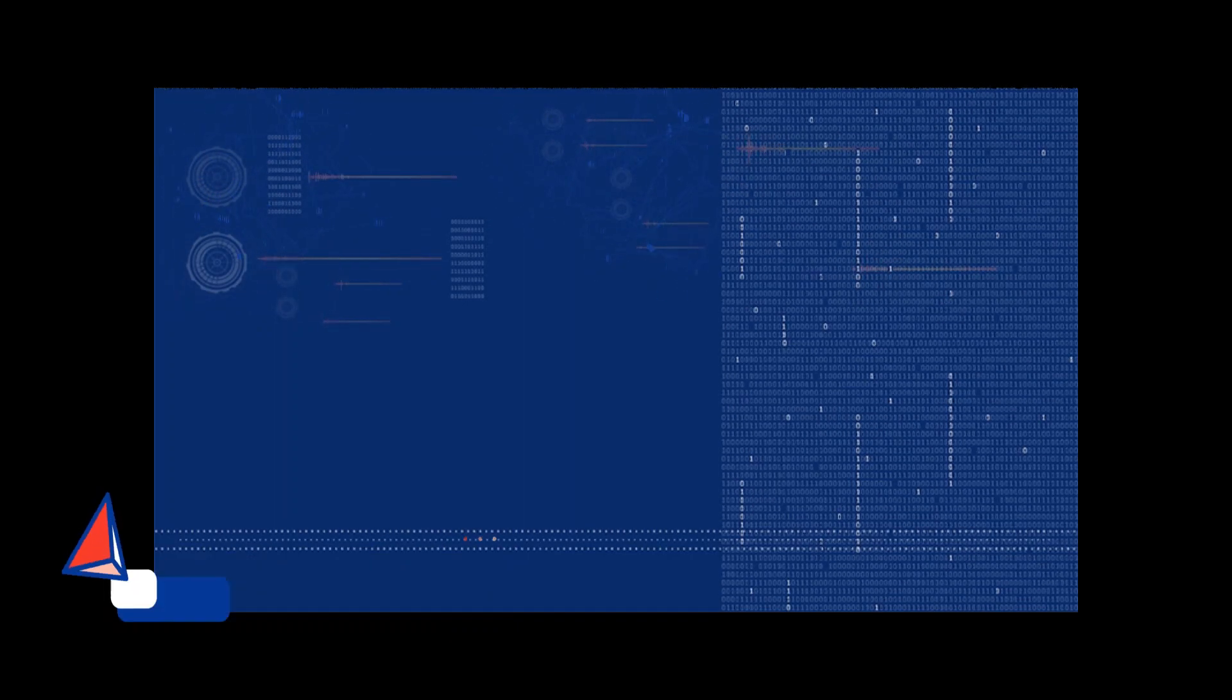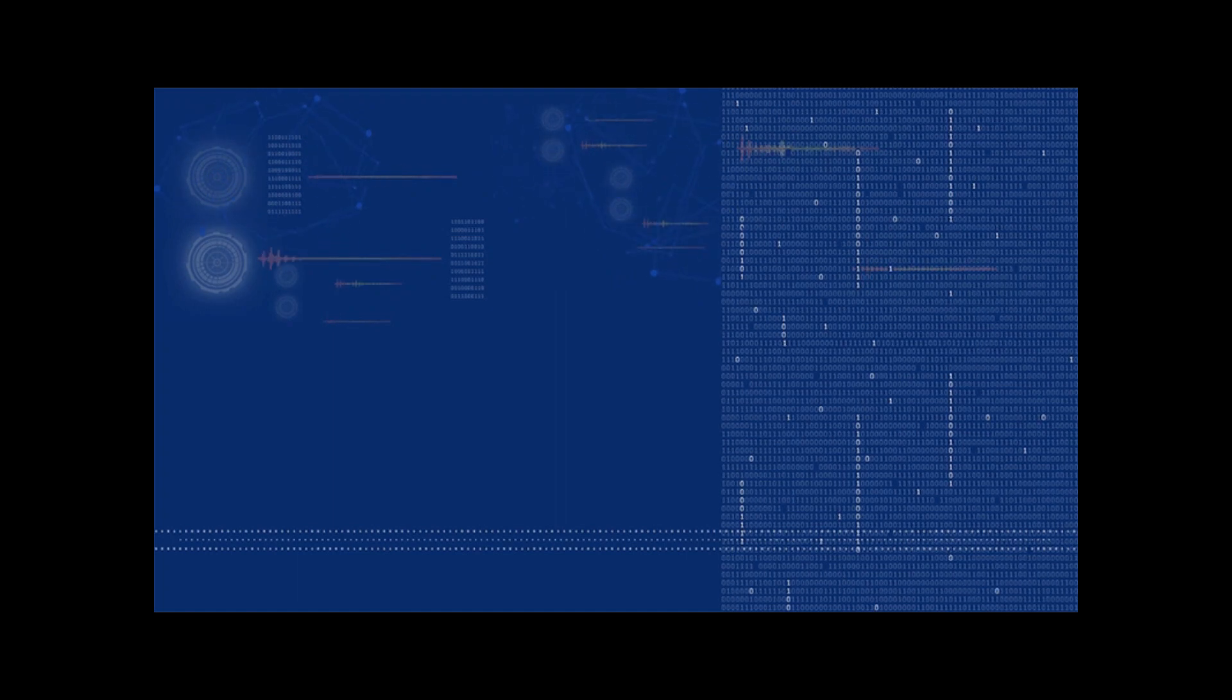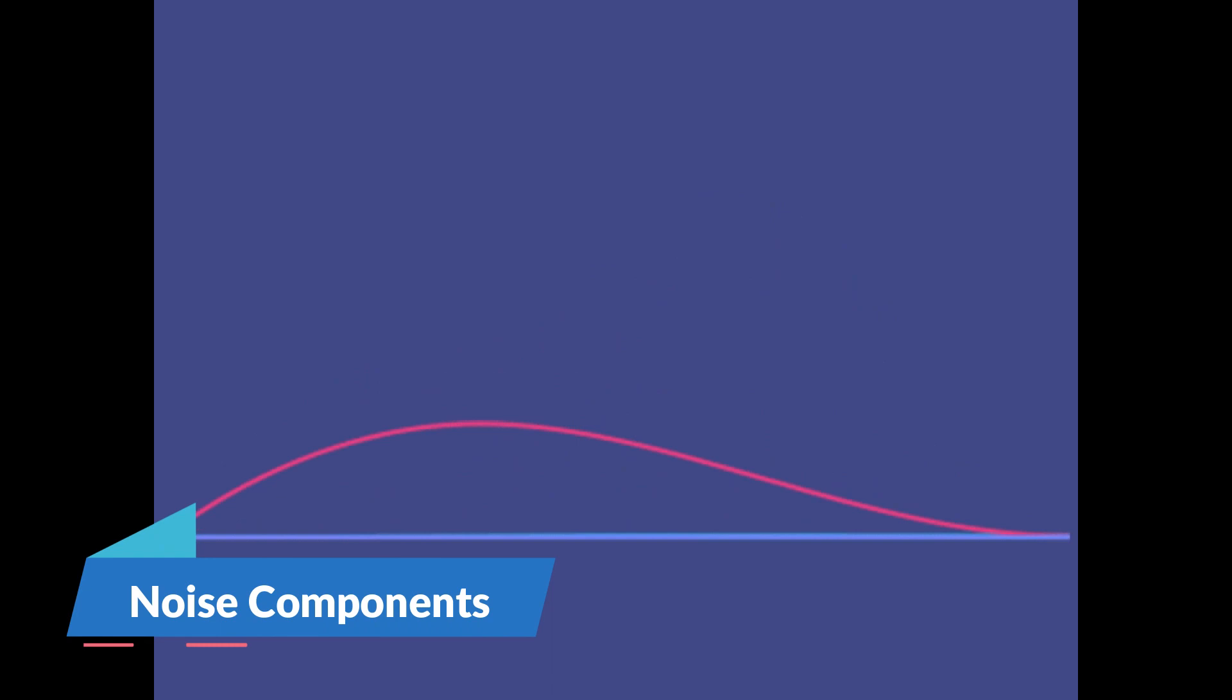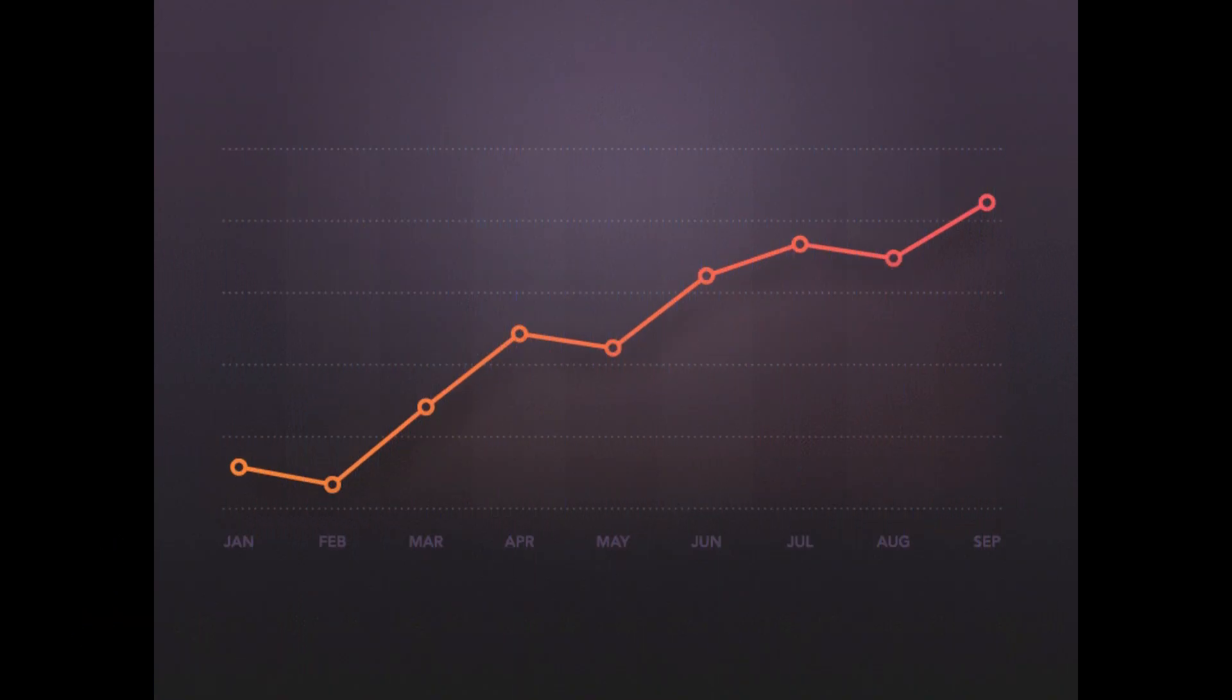Step 4: Time series decomposition. Decompose the time series data into trend, seasonality, and noise components. This can be done using the additive or multiplicative decomposition method.